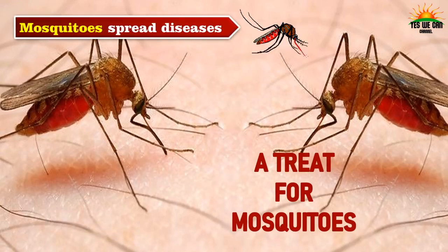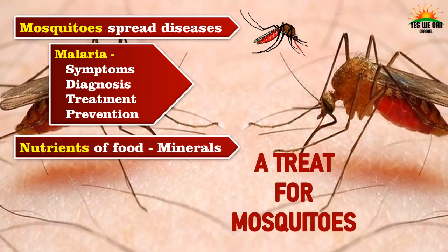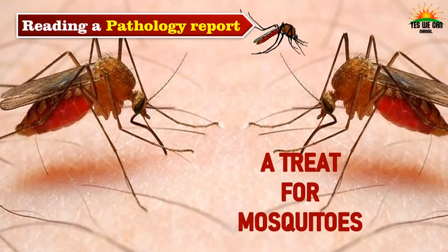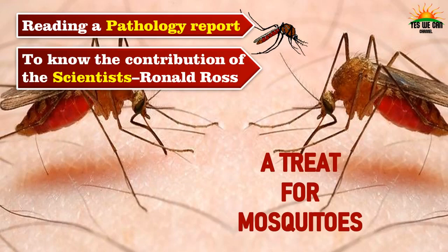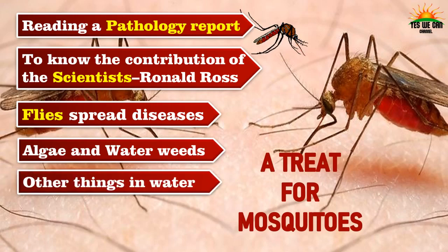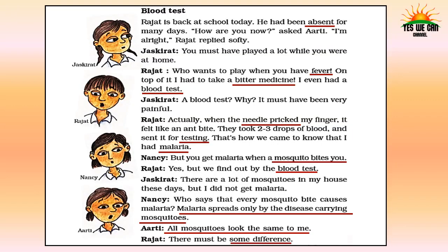In this chapter we are going to learn about mosquito-spread diseases, and in detail about malaria — its symptoms, diagnosis, treatment and prevention. Then about nutrients of food with special reference to minerals, about anemia, reading a pathology report, the contribution of scientists especially Ronald Ross, fly-spread diseases, algae and water weeds, cleanliness, and a project: making a poster to create awareness about malaria.